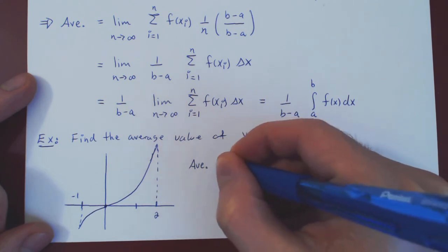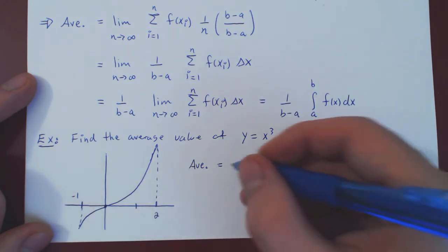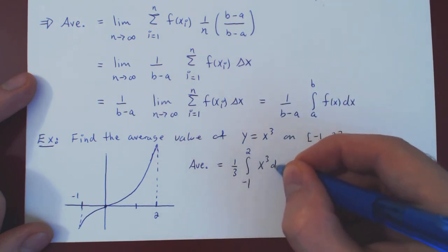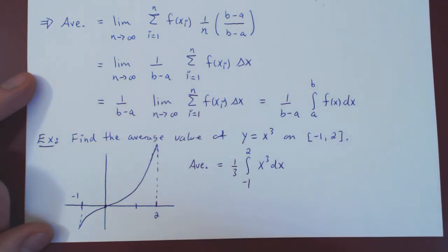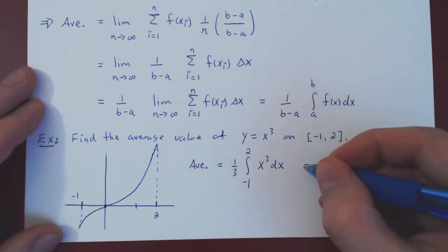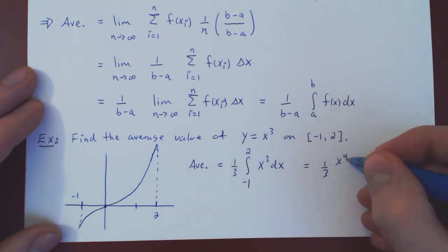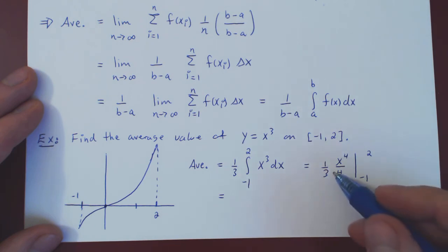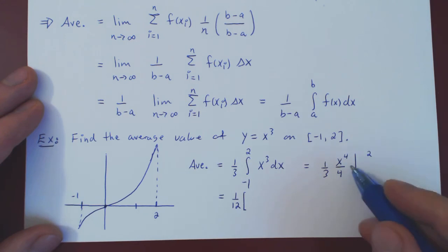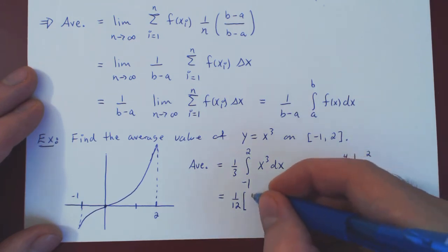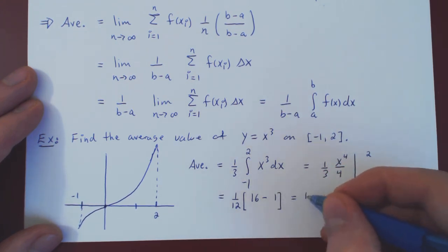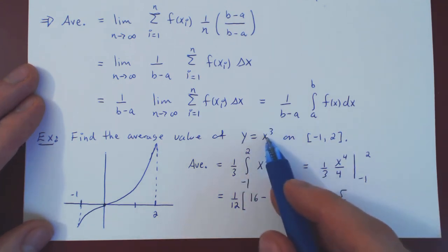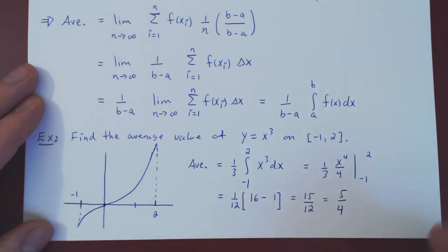The average value is 1/(b − a) times the integral, so 1/(2 − (−1)) = 1/3, times the integral from −1 to 2 of x³ dx. Applying the power rule, the antiderivative is x⁴/4, giving (1/3)(x⁴/4) evaluated from −1 to 2. We can factor to get 1/12 times (2⁴ − (−1)⁴) = 1/12 times (16 − 1) = 15/12. Simplifying by a common factor of 3 gives 5/4. So the average value of x³ on [−1, 2] is 5/4.